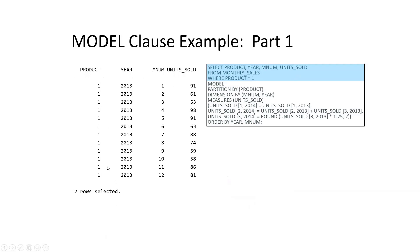So we have product number one, that's the only product that we're interested in right now. And we're going to be trying to predict our sales for product one in the year 2014, based on the year 2013. So for product one in year 2013, in January, we sold 91 units in February, 61 units, March 53 units, and so on down the line.